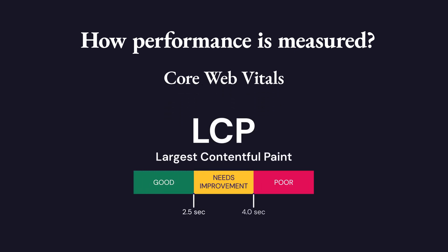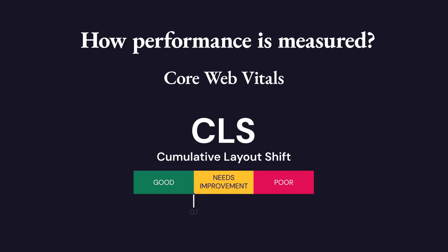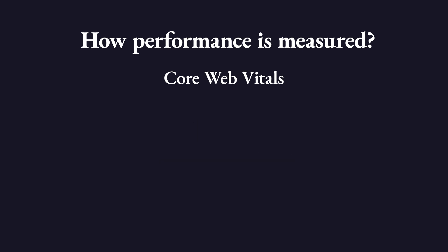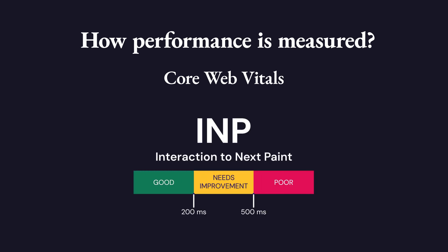Number one: LCP, or Largest Contentful Paint, measures when the largest element on the page becomes visible. Number two: CLS, or Cumulative Layout Shift, measures how much the elements on the page shift while the page is loading. And number three: INP, Interaction to Next Paint — a new addition to the list that measures how long it takes for the page to respond to user interactions, for example, clicks, taps, and keyboard inputs.